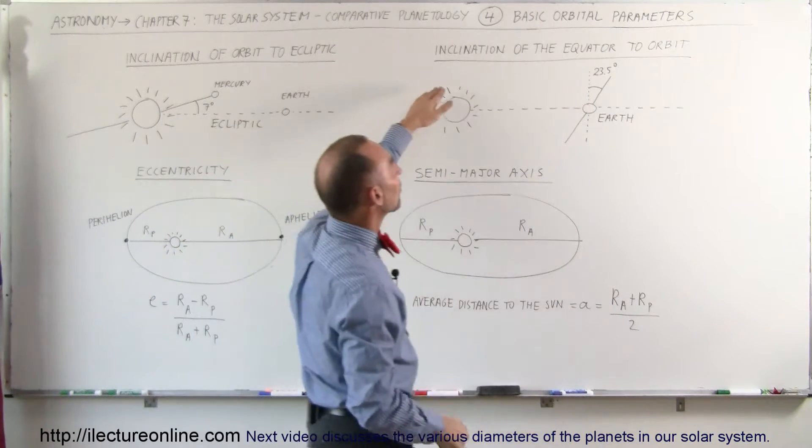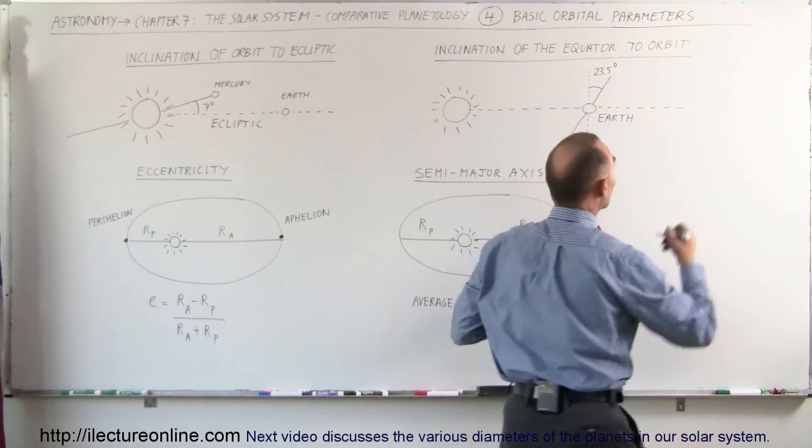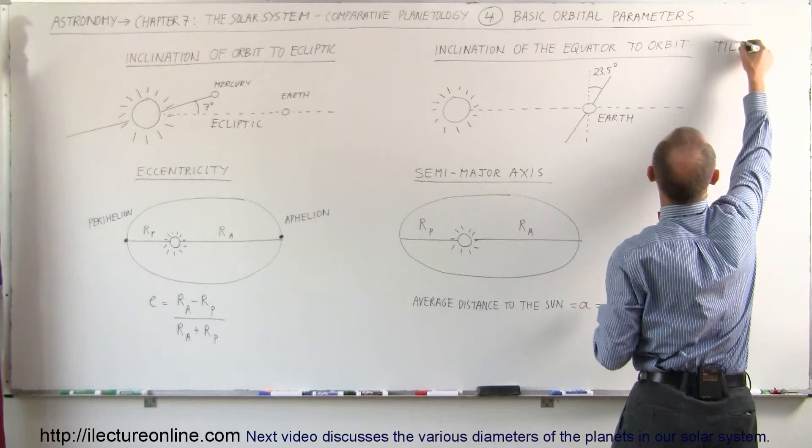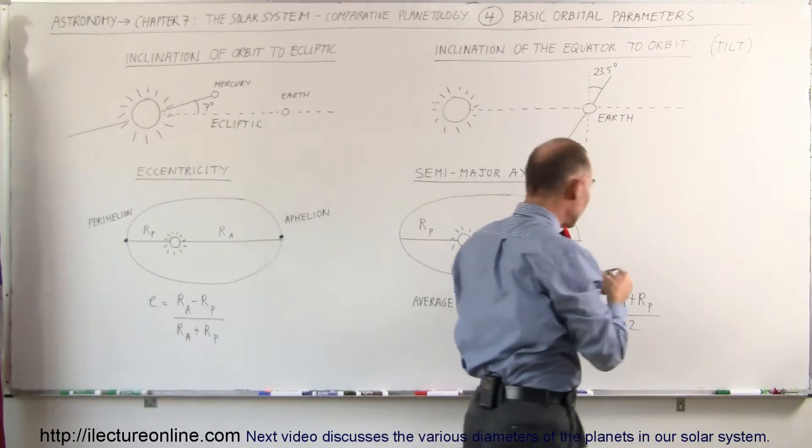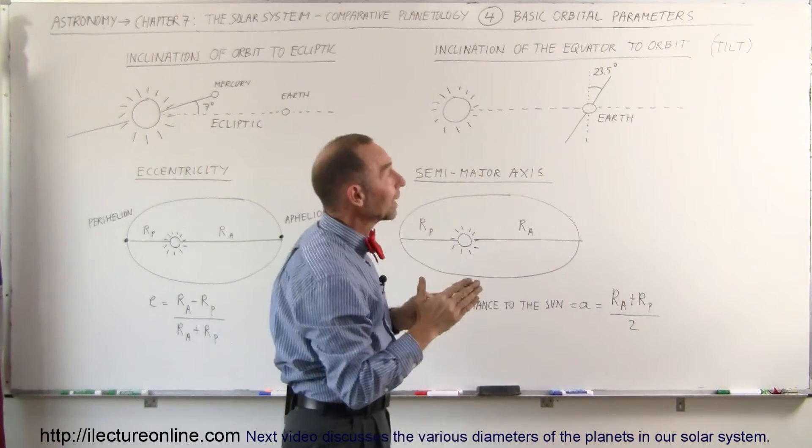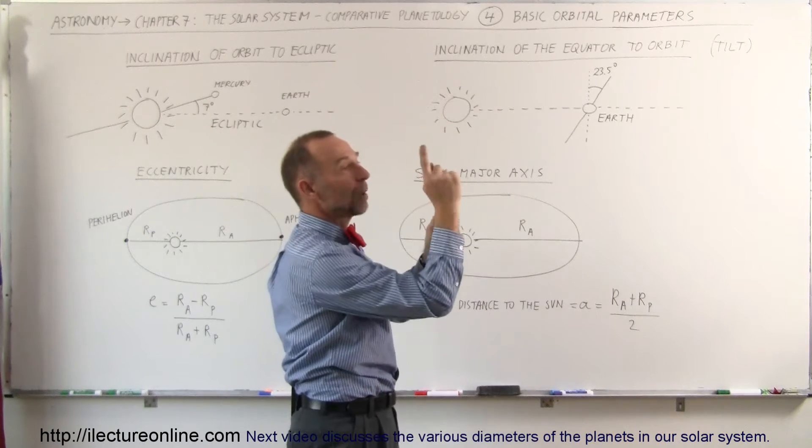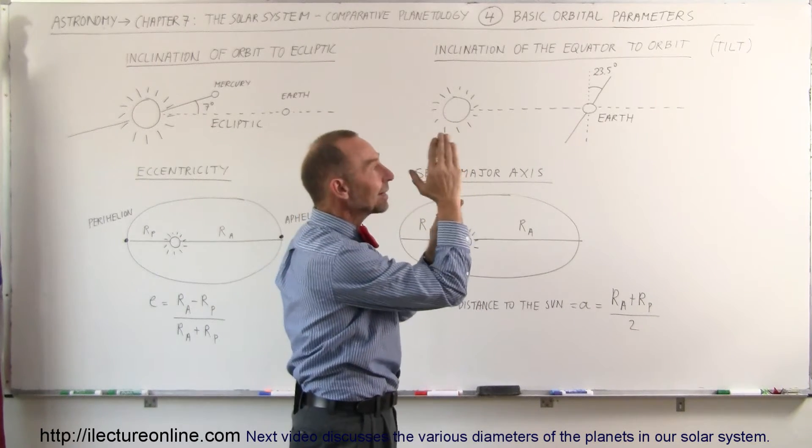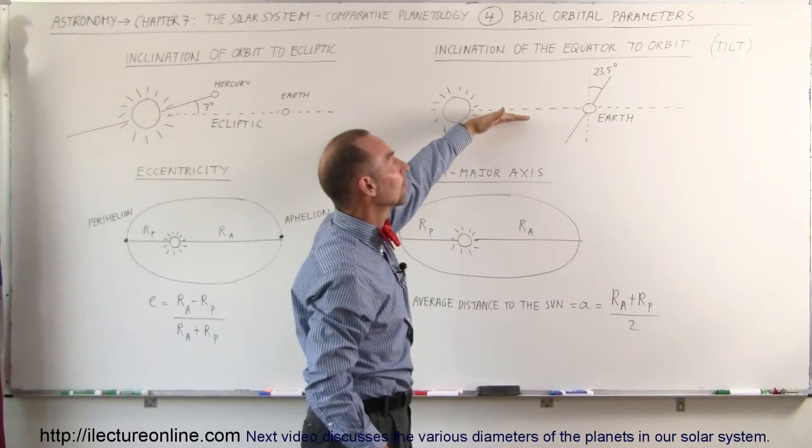Then we have what we call the inclination of the equator to the orbit. This is also known as the planetary tilt. And so what happens is that most of the planets, their axis about which they rotate is not exactly perpendicular to the orbital plane.